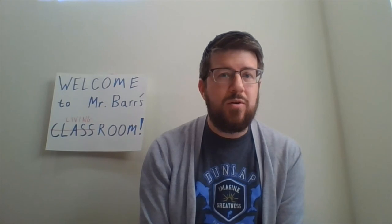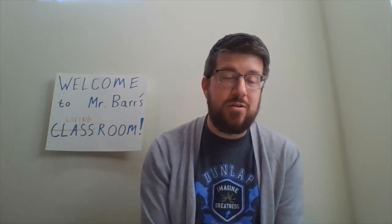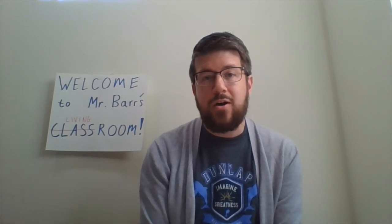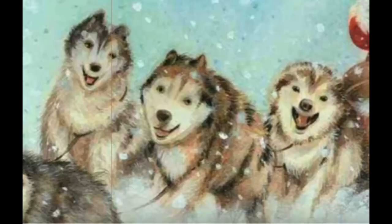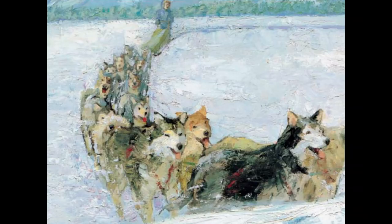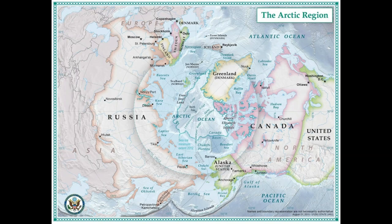If you haven't read Akiak, go ahead and make a text-to-text connection between Not My Girl and any other book you've read at school, at home, with IDR, or anything else. You might have said that the characters in Akiak are like the characters in Not My Girl because both stories have characters that are sled dogs. You also might have said that the setting in Akiak is the same as the setting in Not My Girl, because both settings are in or near the Arctic region where it's very, very cold and snowy.